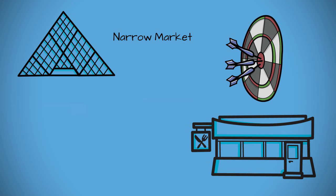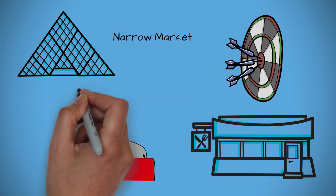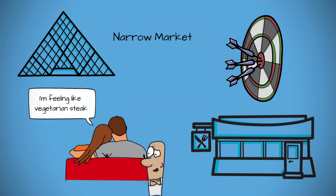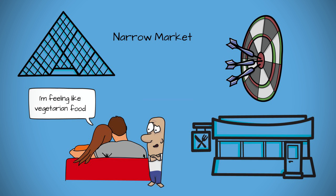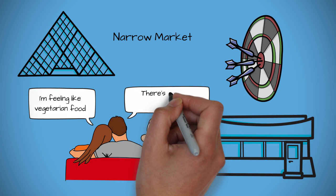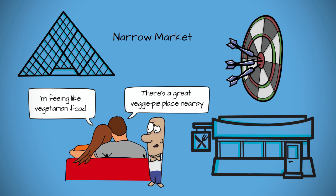So let's say you own a vegetarian steak business and you make it sound like your market is very narrow—vegetarian steak. But in fact, the real market is vegetarian food in general, not vegetarian steak, because you could be the only vegetarian steak restaurant in the area, but if people like vegetarian pies better, then you will have no business at all.